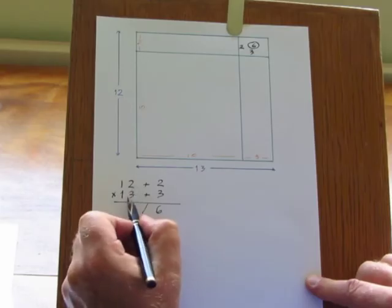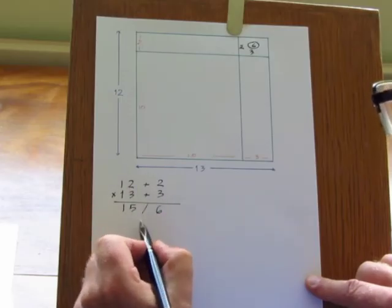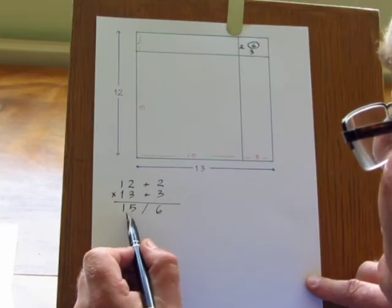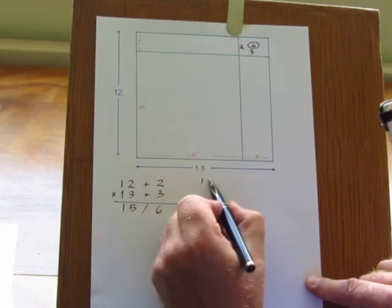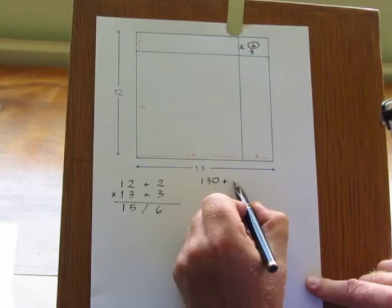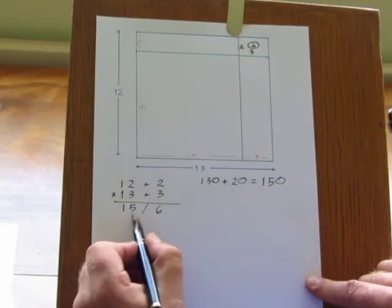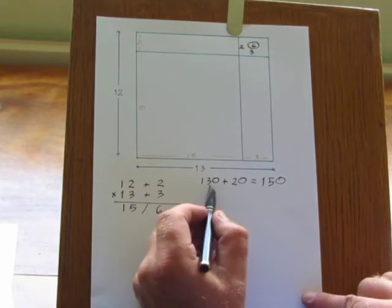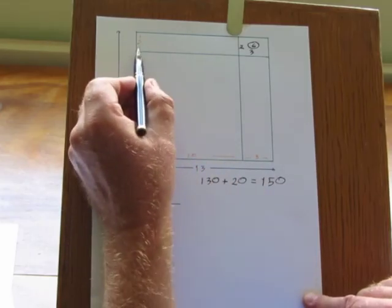On the left we had the cross addition: 13 add 2, or 12 add 3, gives 15. But in fact this is 150 because of where the digits stand. So in the cross addition of 130 add 20, the result is 150. And that 150 is down here. Where is that on the diagram?